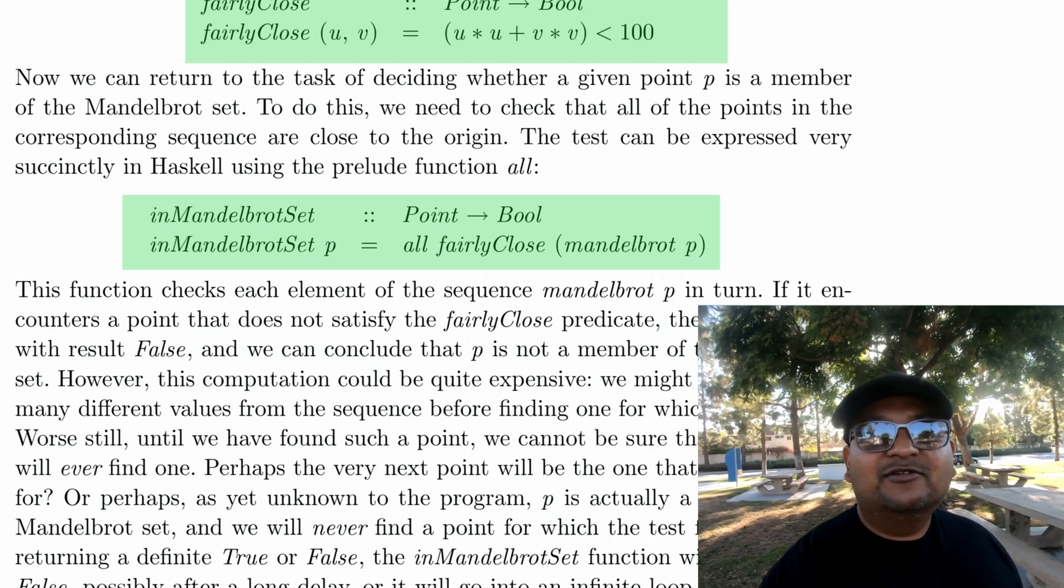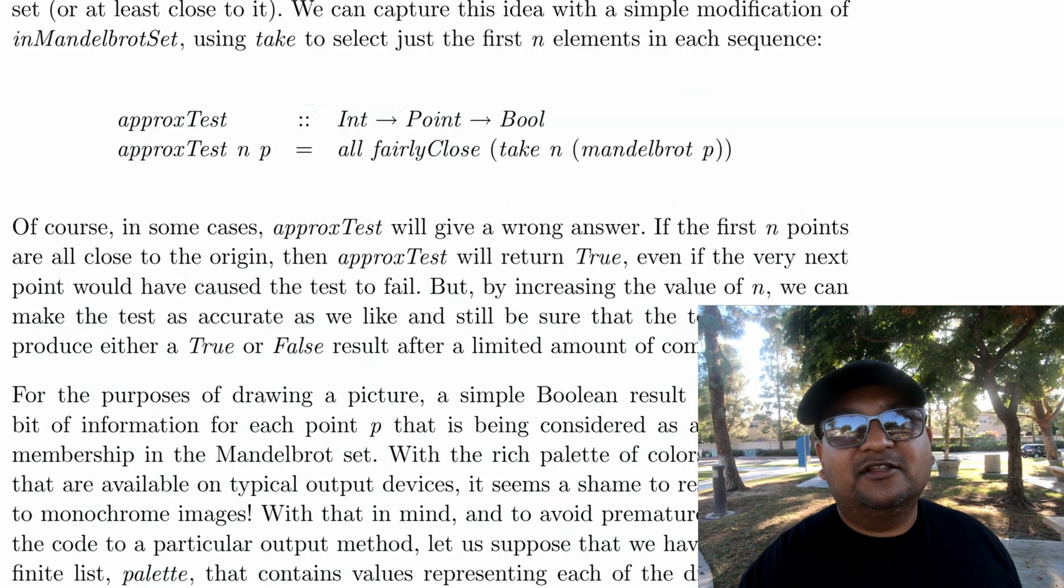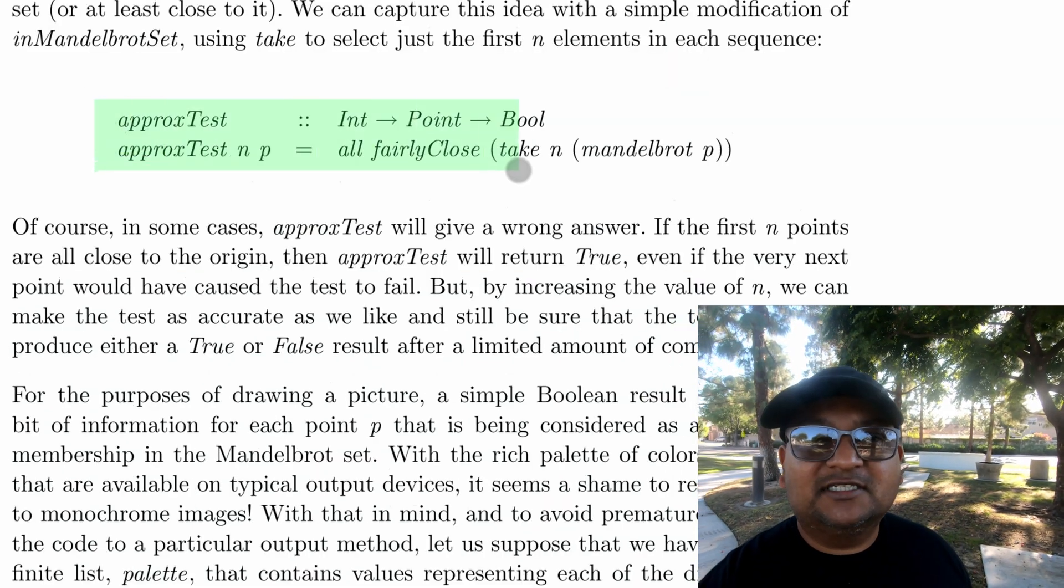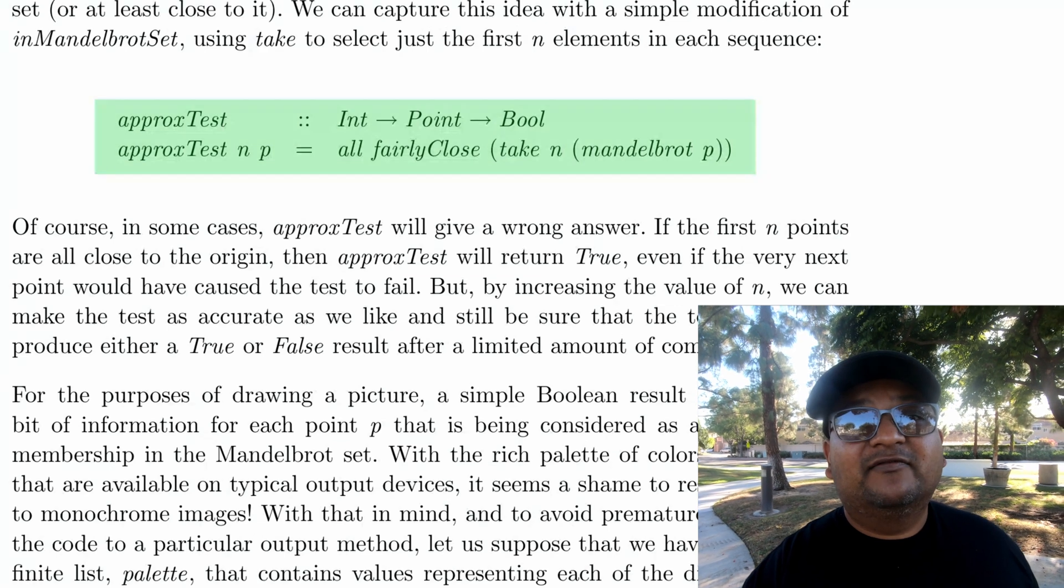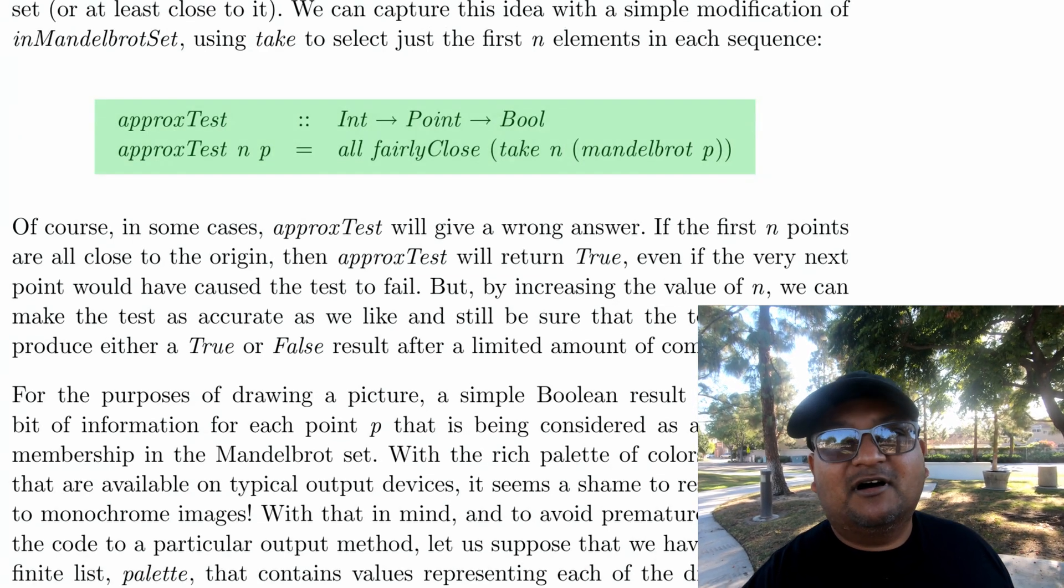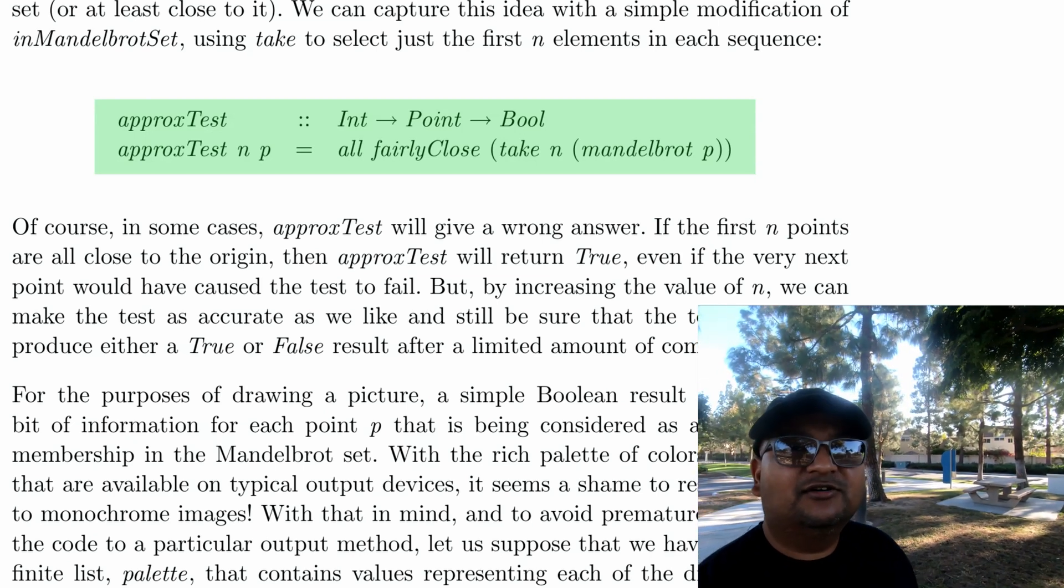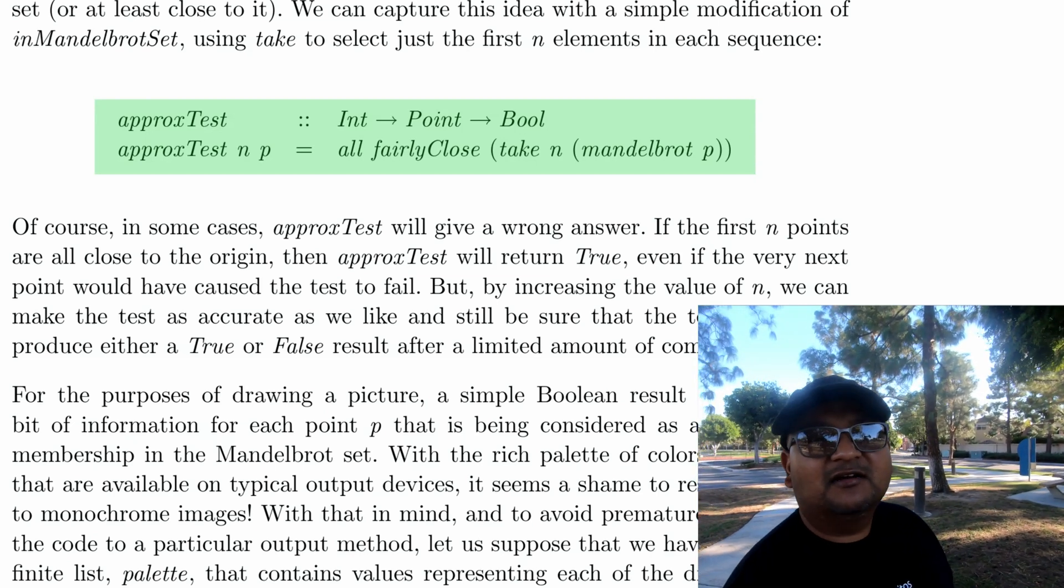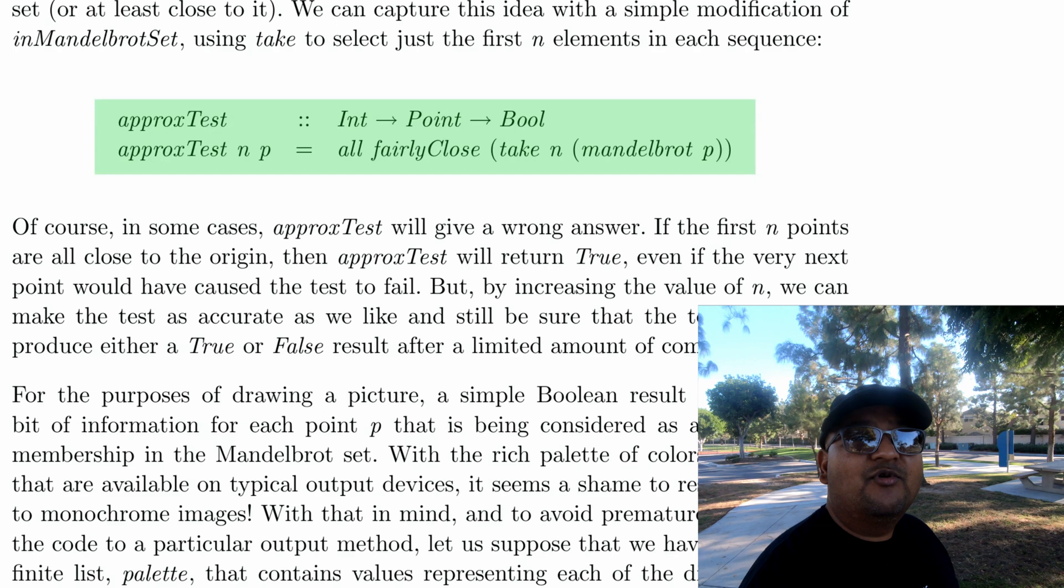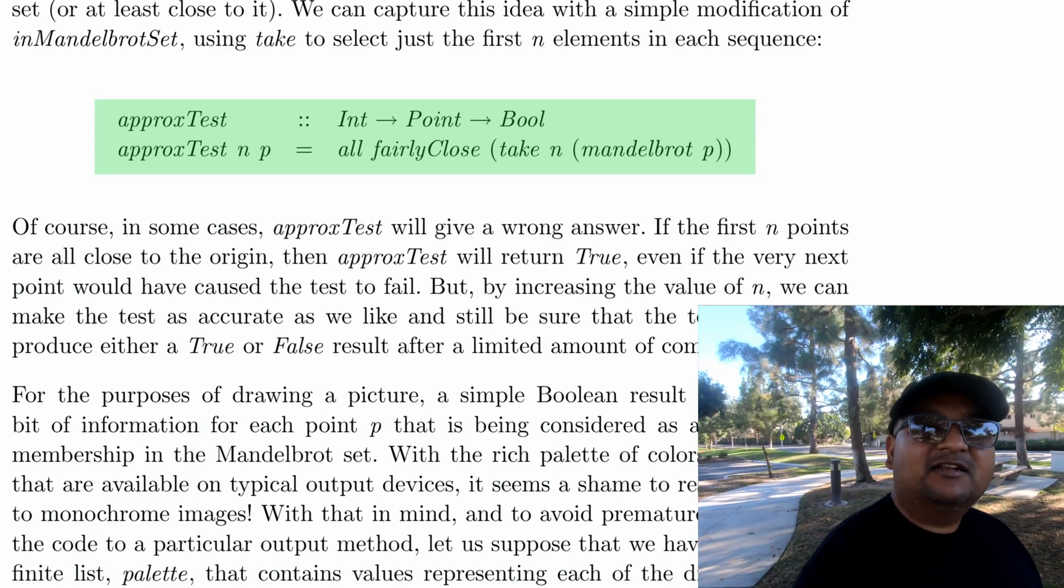So you do the next best thing, which is to take an approximation. You take the first n points in the sequence and then check if those n points in the sequence are close enough to the origin. And this expression tells you if for any given point P on the complex plane, the point is in the Mandelbrot set or not.